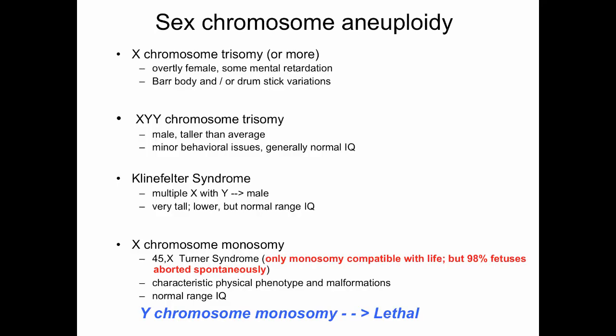We can also talk about sex chromosome aneuploidy. X chromosome trisomy, or even more X chromosomes — these individuals are overtly female, there may be some intellectual disability, and you'll see Barr body and drumstick variations. XYY chromosome trisomy individuals are male, may be taller than average, and there may be some minor behavioral issues, but generally XYY males have a normal IQ.